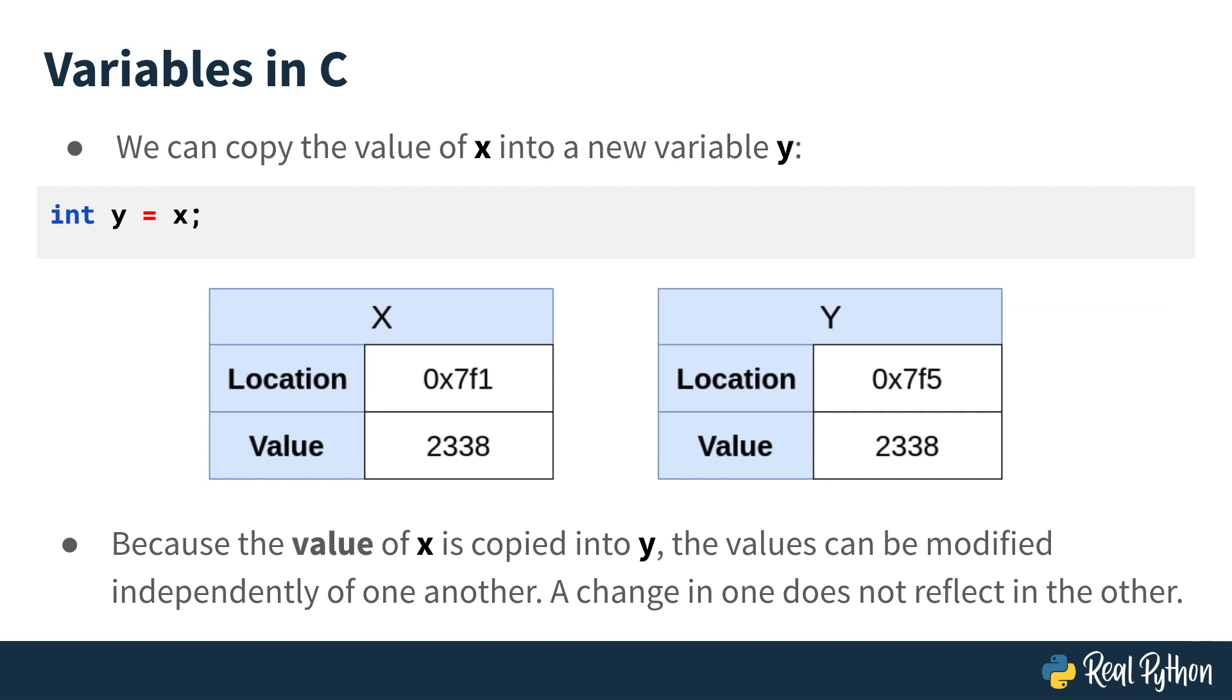This means that x and y now occupy two entirely different spaces in memory, but those different spaces contain the same value. Each value can be modified independently of one another.